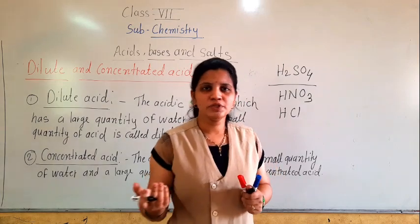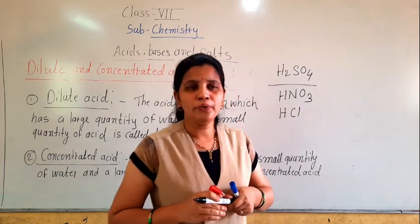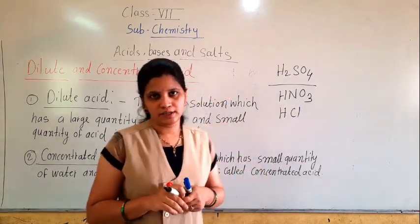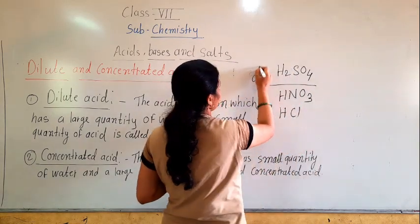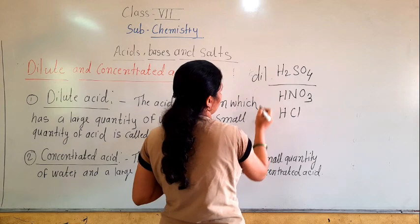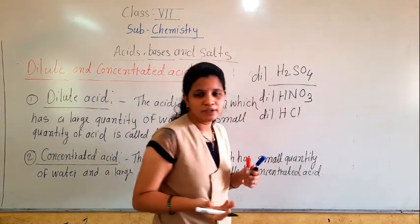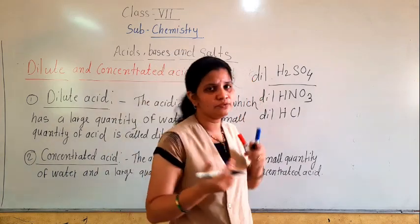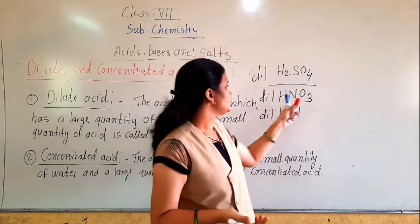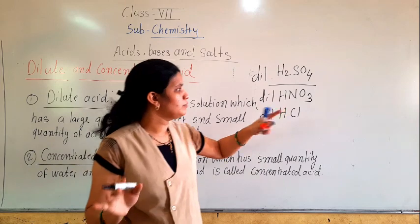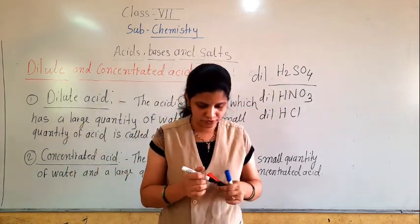So many times you visit our chemistry lab. In that rack, some bottles are there, and on those particular bottles it is written 'DIL'. Now, DIL means what? We know H₂SO₄ means sulfuric acid, HNO₃ means nitric acid, and HCl means hydrochloric acid — but this DIL means what? Dilute.